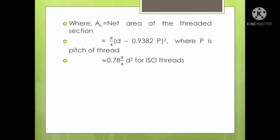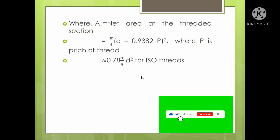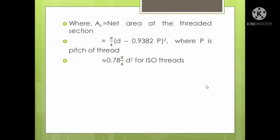When designing a tension member, you must check that the design strength is greater than the given load. You also need to design the bolted connections: assume or design the bolt diameter, spacing, pitch, and select the section. Whenever a member is to be designed, you select the section and also determine the bolt diameter and number of bolts.